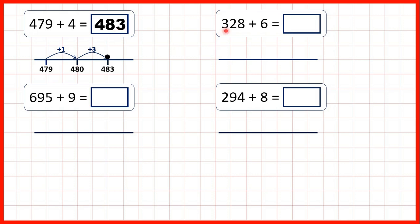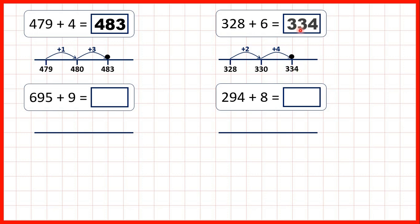Now let's try 328 plus six. If we start at 328, we can add two to get to 330 — so to the next multiple of ten. And then, if we want to add six, we need to add four more, because if we add two and then add four, we've added six altogether. So 330 plus four is 334, and that's our answer.